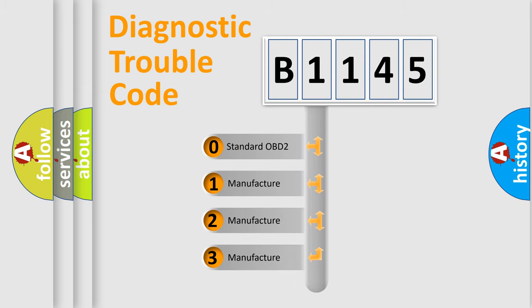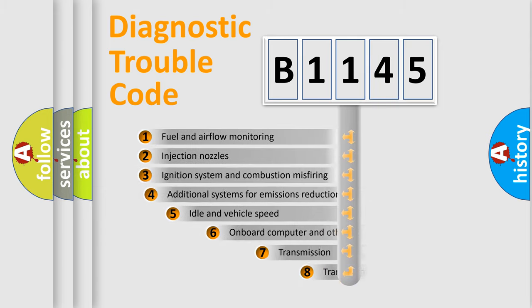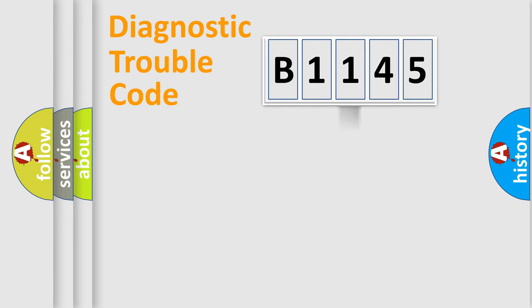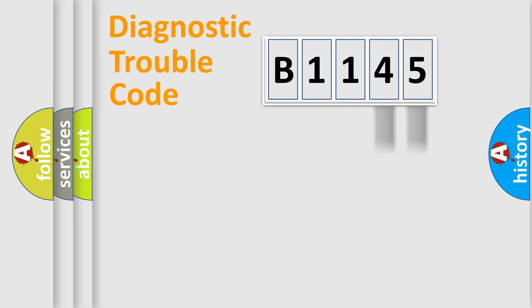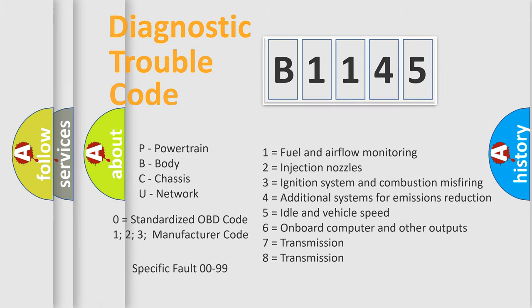If the second character is expressed as zero, it is a standardized error. In the case of numbers 1, 2, or 3, it is a more specific expression of a car manufacturer error. The third character specifies a subset of errors. This distribution is valid only for the standardized DTC code. Only the last two characters define the specific fault of the group, and this is valid only if the second character is zero.